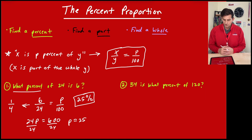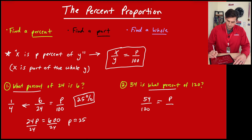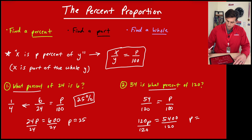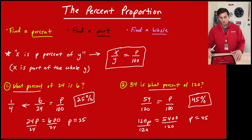Number two: '54 is what percent of 120?' It asks the same thing but looks a little different — it still says 'what percent.' So we set up 54 over 120 equals p over 100. Cross multiplying gives 120p equals 5,400, then we divide by 120. 5,400 divided by 120 gives 45, so this is 45%. So 54 is 45% of 120.